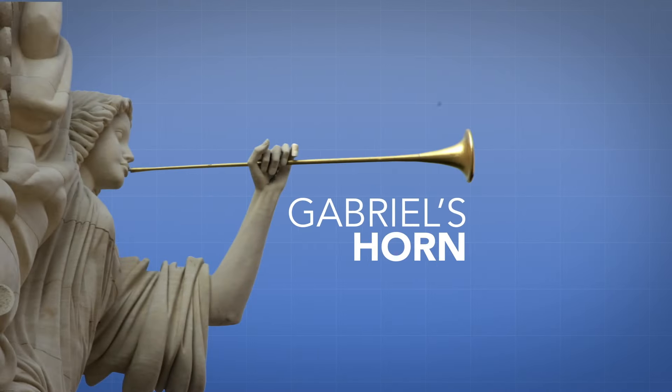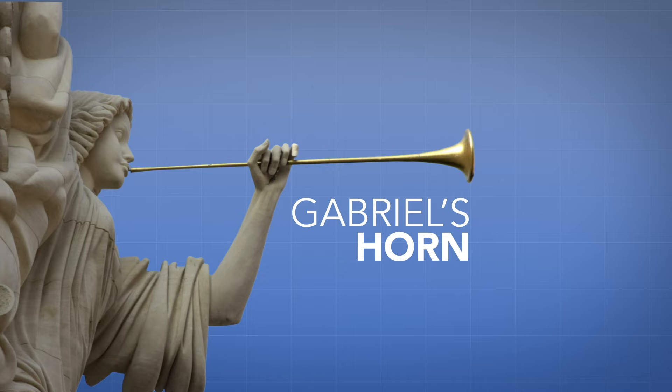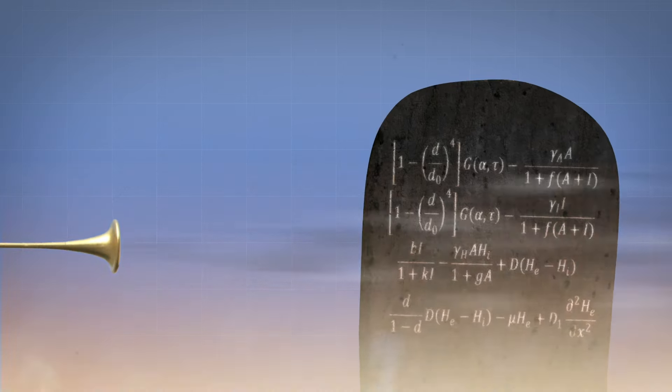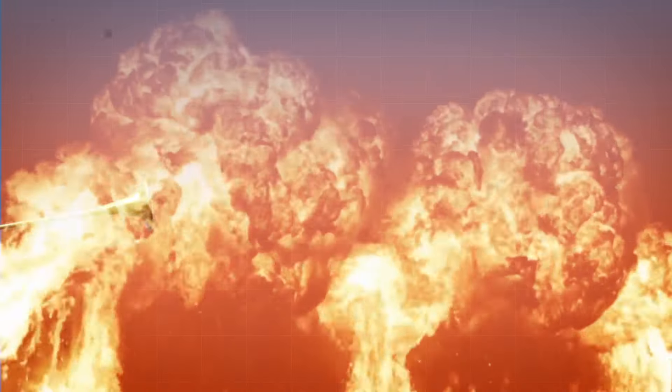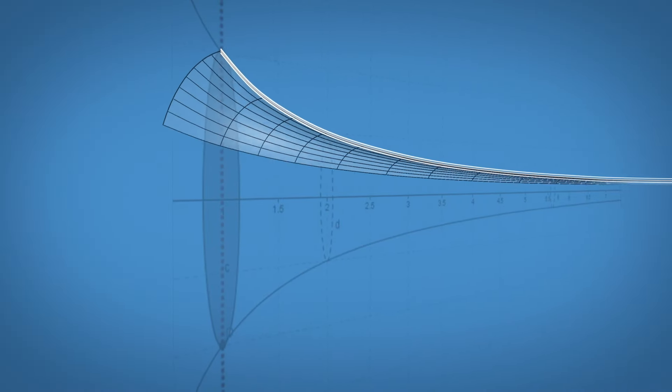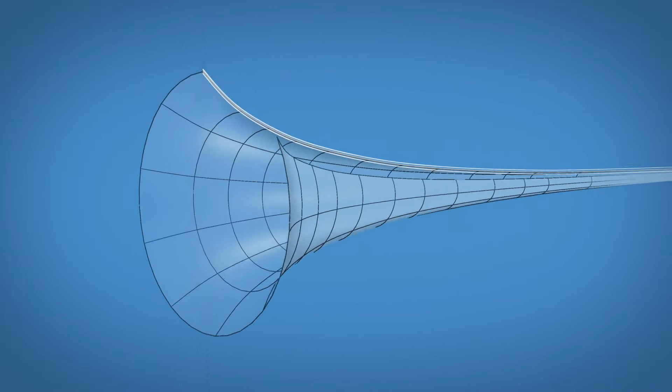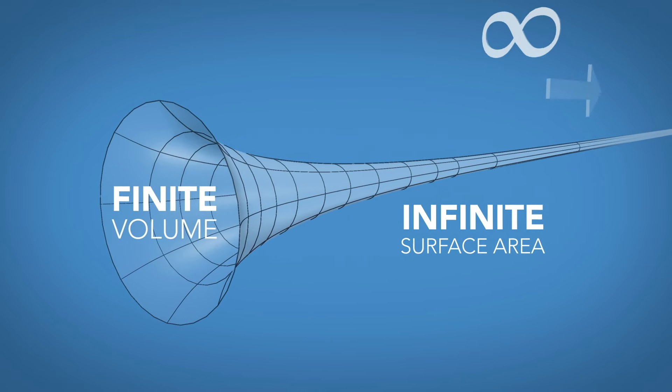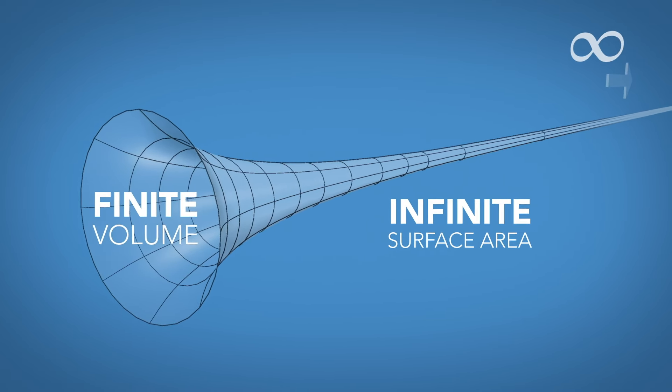The first of these objects was discovered in the 17th century by a student of Galileo, Evangelista Torricelli. It was given the name Gabriel's Horn after the archangel Gabriel who blew his horn to announce Judgment Day, perhaps hinting at what it was about to do to mathematics. Torricelli had discovered an object that was infinite in surface area, yet finite in volume, that was infinitely long, but not infinitely big.